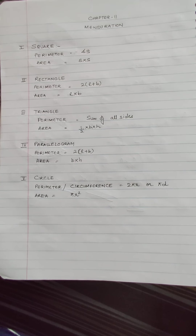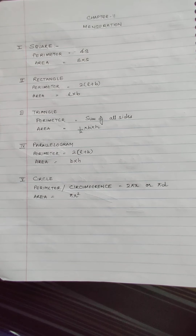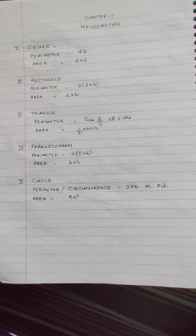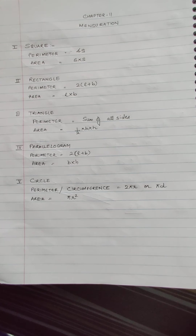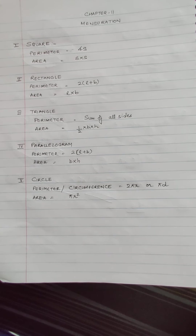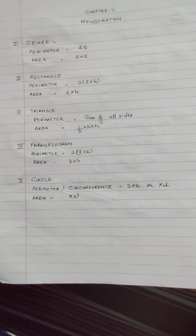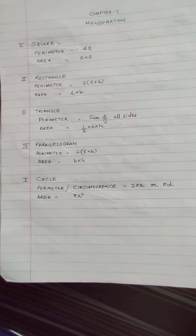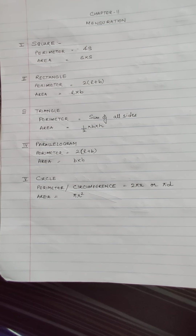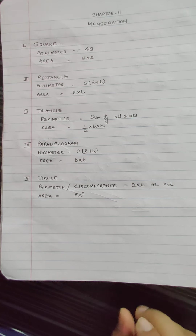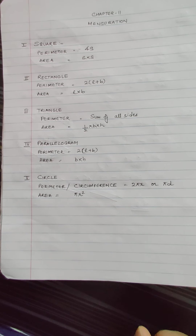In the previous chapter there are new figures: quadrilateral, parallelogram, and trapezium. Plus, there is a new topic — volume and surface area — which in higher classes, 9th and 10th, is one of the most important topics. So make sure that you do these topics thoroughly.